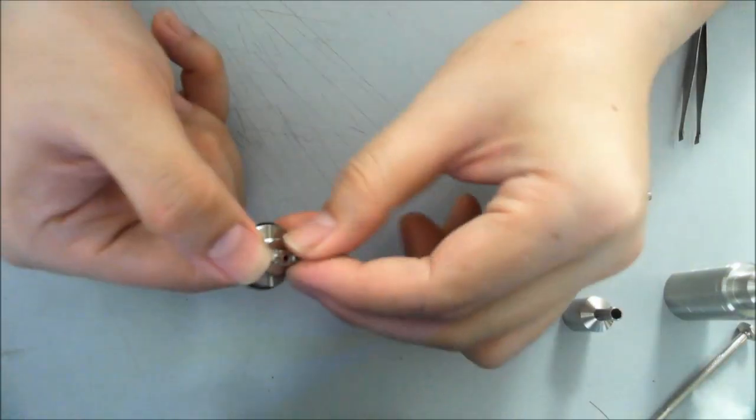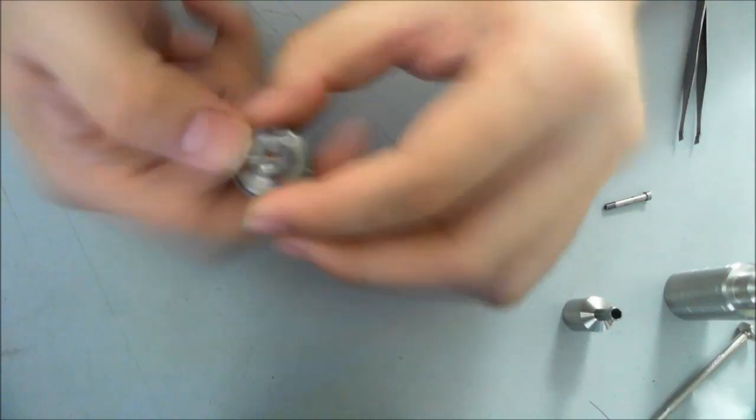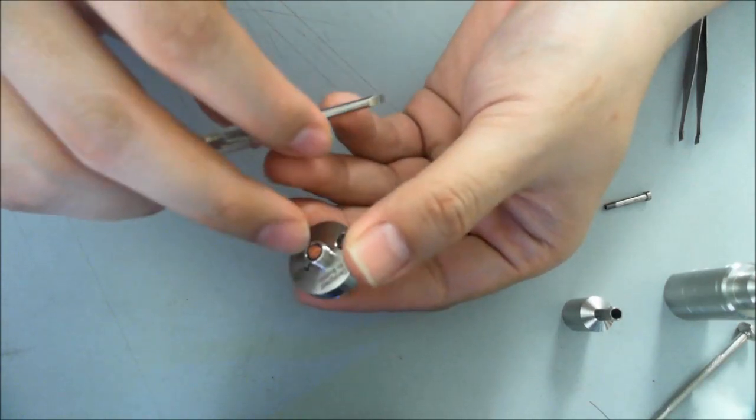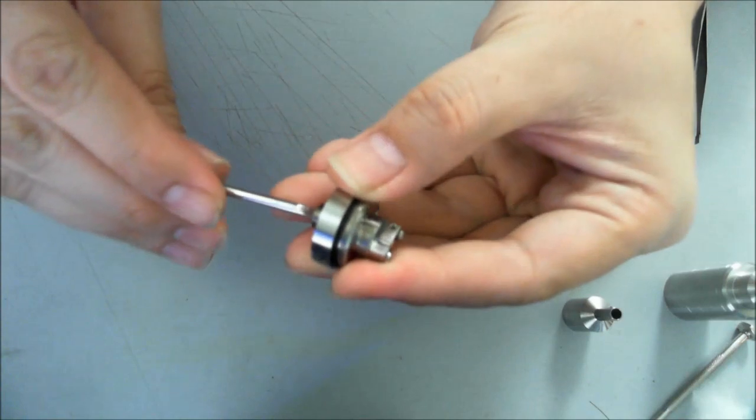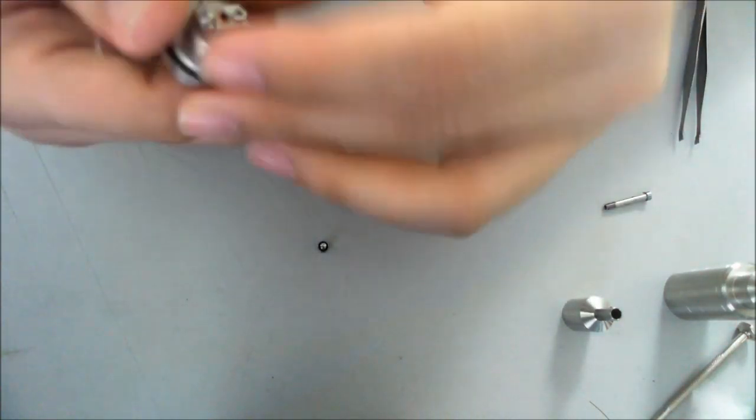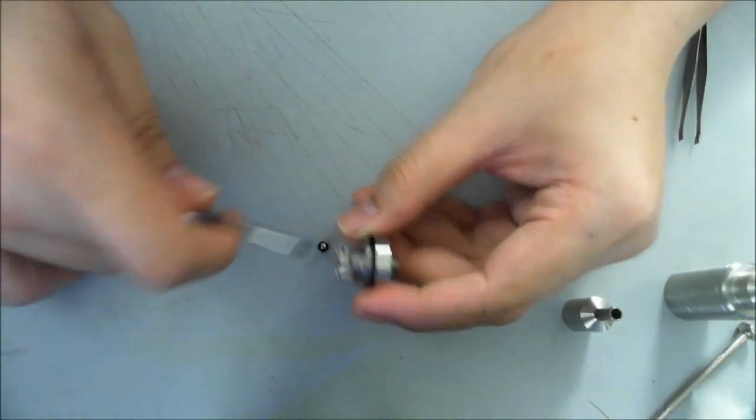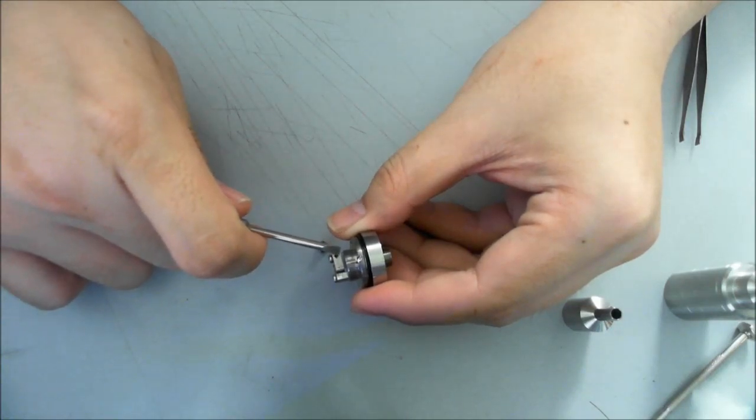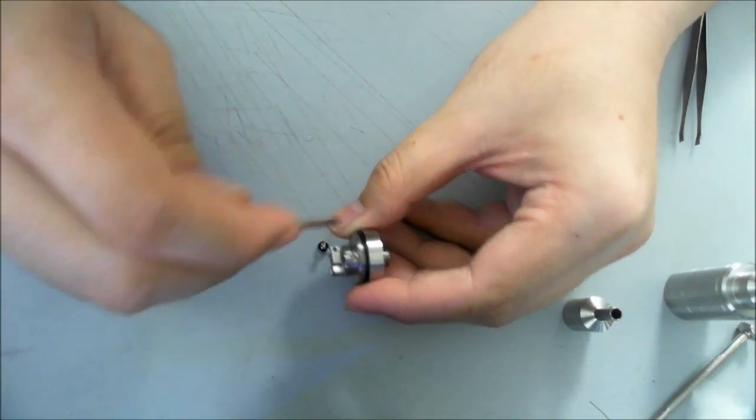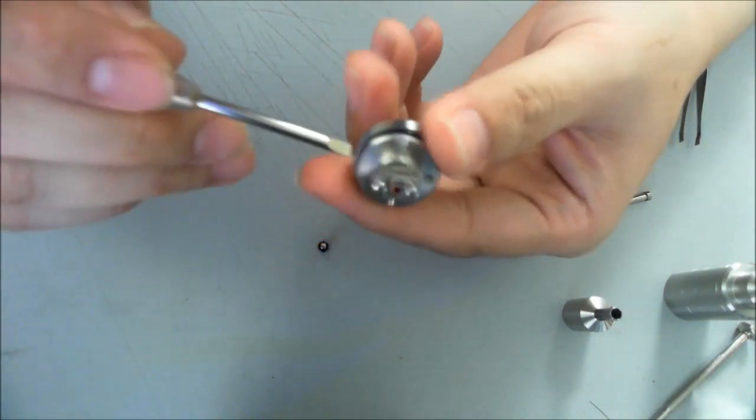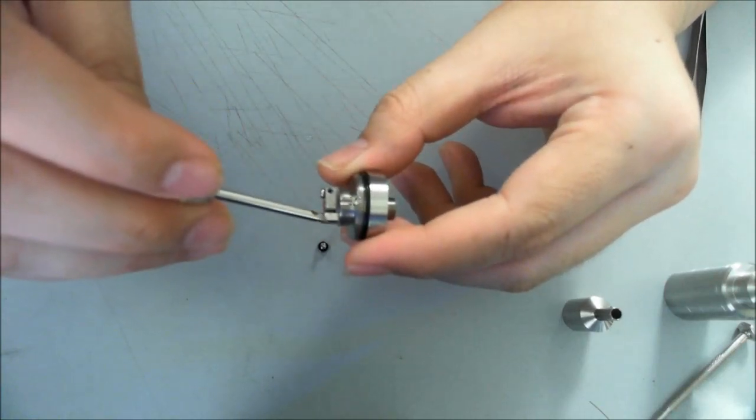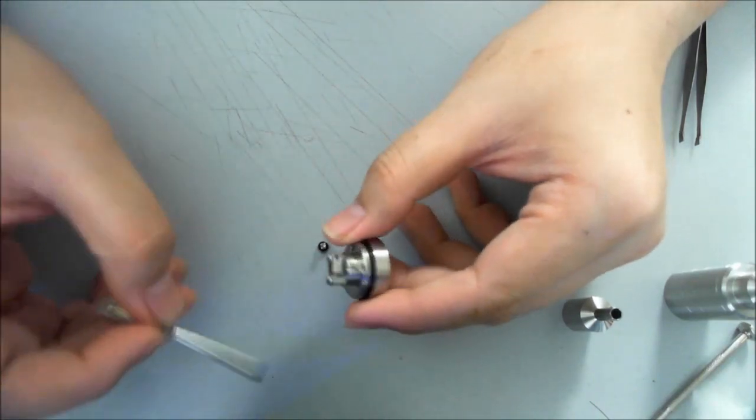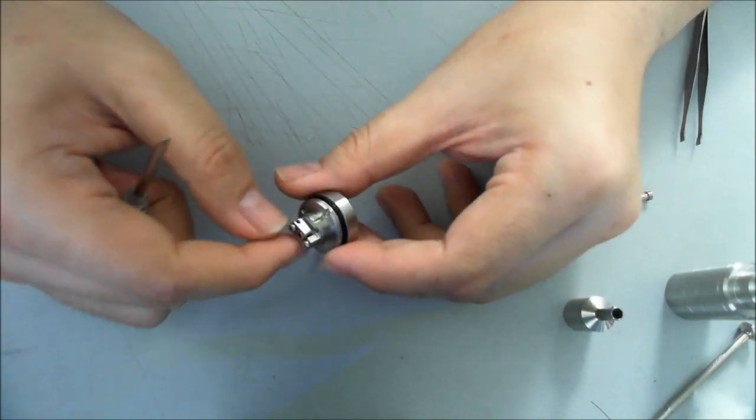But when you're using a mechanical mod like I am, a short could easily kill your spring, could kill your battery, and neither of those are pleasant things to happen. When you're working with copper, I find that it's very important that you use the proper tools. I'm using a very big screwdriver, much bigger than the one I usually use, and that's because copper itself is a very soft metal. When it's so soft and using a very small screwdriver, you could easily damage the groove there, and that's never nice.